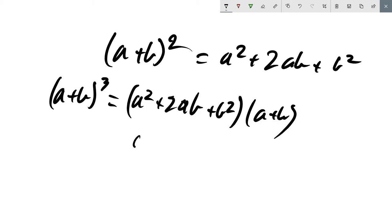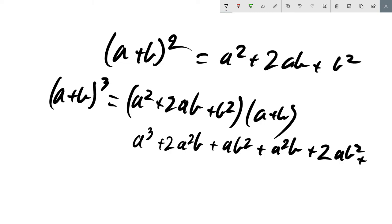So times the a's first, so we'll have a cubed plus 2a squared b plus ab squared. And then we'll expand the b: a squared b plus 2ab squared plus b cubed.